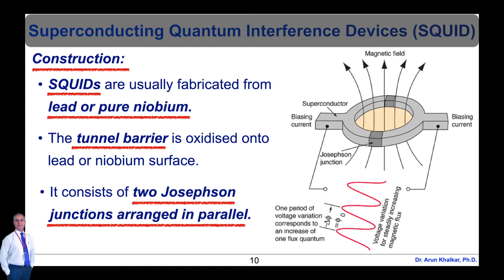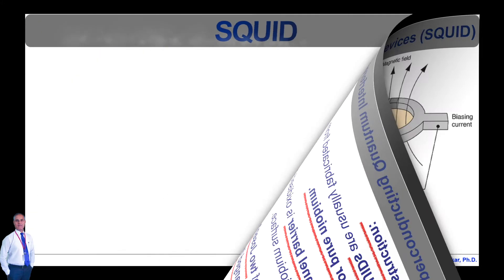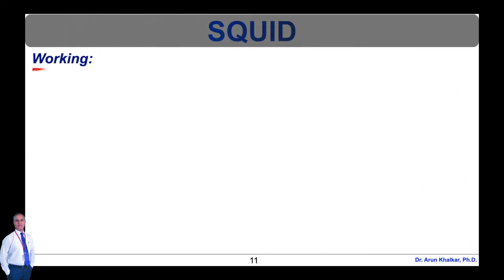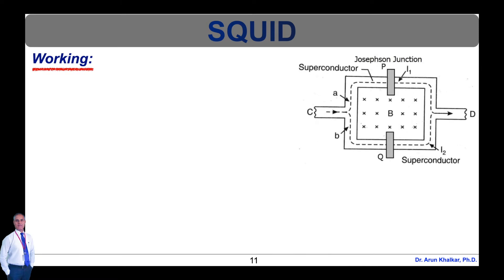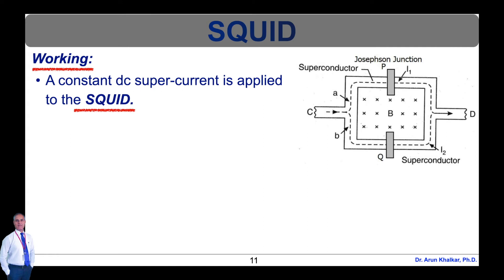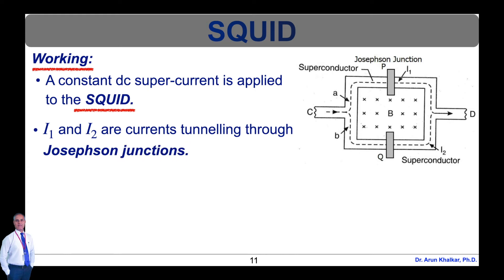The SQUID consists of two Josephson junctions arranged in parallel. In this diagram, magnetic field is passed through the ring of Josephson junction, whereas the superconductor biasing current is connected to it. A constant DC supercurrent, known as bias current, enters into the SQUID through arm C. It is divided along paths A and B and again merges into one and flows out through arm D. Currents I1 and I2 are currents tunneling through the Josephson junctions.